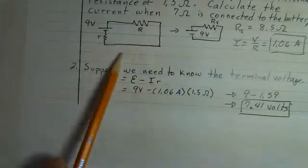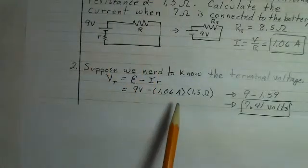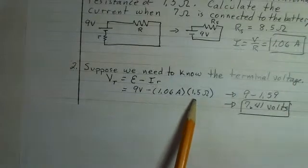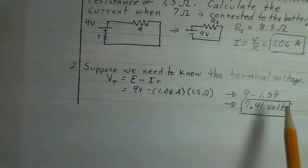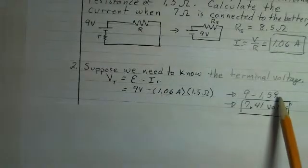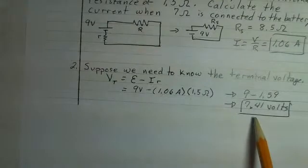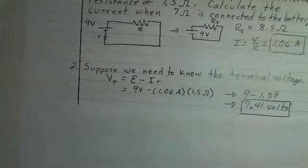The current throughout this whole circuit, 1.06 amps. And then the internal resistor, 1.5 ohms, 1.06 times 1.5. There's a voltage drop inside the battery, 1.59 volts, leaving 7.41 volts for the terminal voltage.